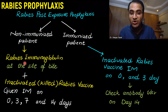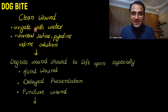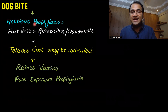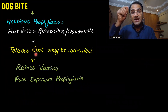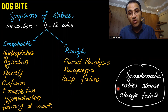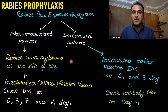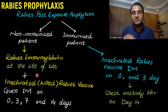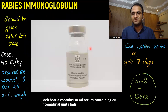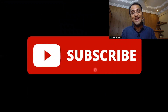In summary: if the patient is not immunized, give rabies immunoglobulin as well as rabies vaccine. If the patient is immunized, give only the vaccine doses. For dog bite management overall: clean the wound, leave it open, give antibiotic prophylaxis, give tetanus shot, and decide whether to give post-exposure prophylaxis. The rabies vaccine is never given in the gluteal region.